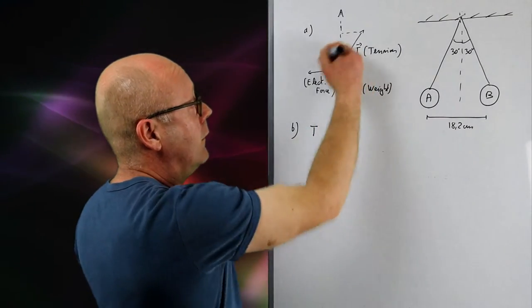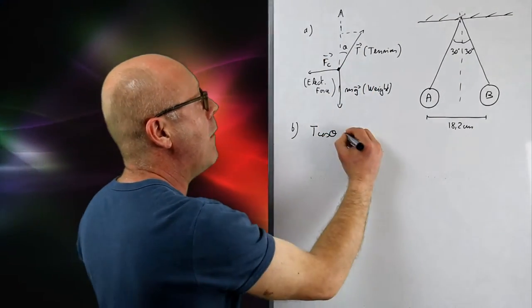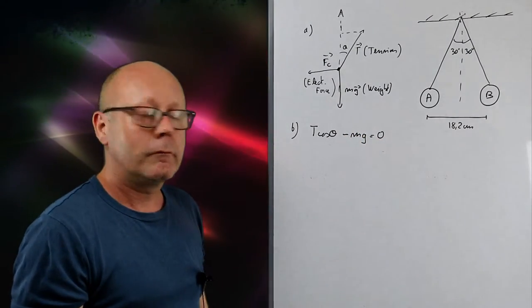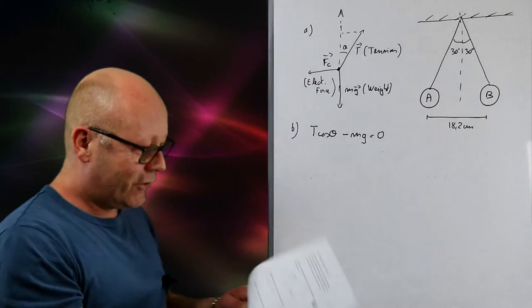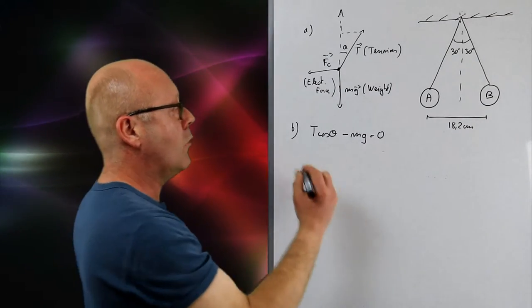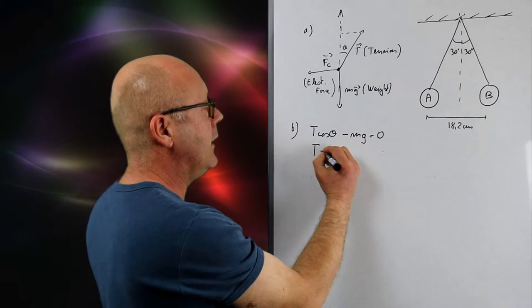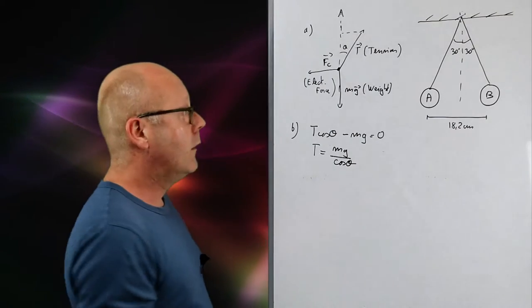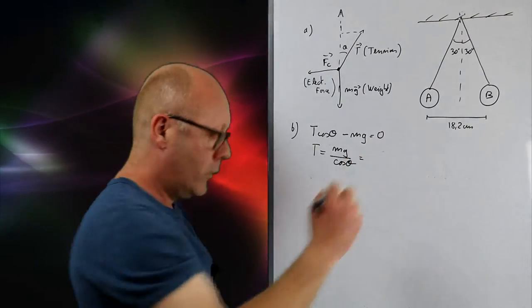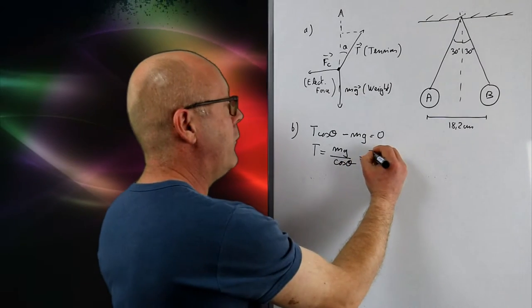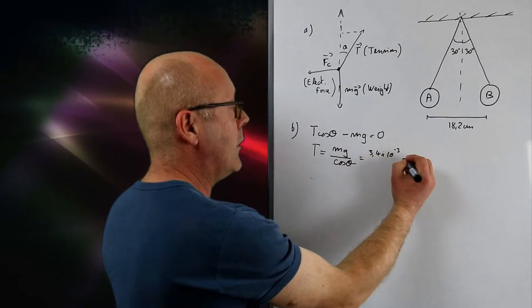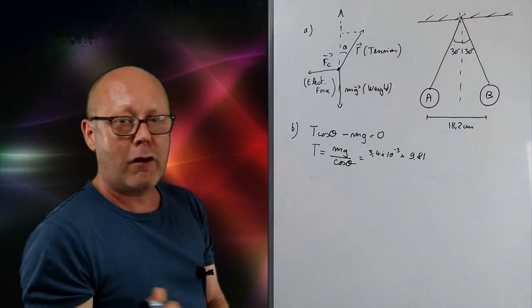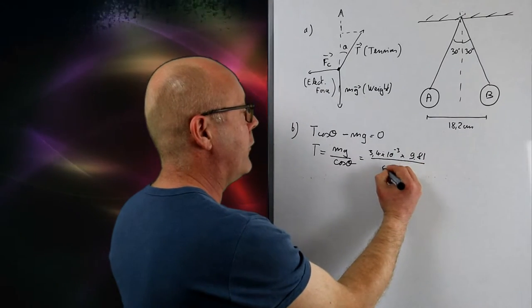I've got T cos theta minus mg equals zero. So what do they ask? The tension in one of the ropes. So T. T equals mg over cos theta. Now, I'll just plug in the numbers. So that was 3.4 grams, so 3.4 times 10 to the minus 3, because we need to use kilograms. 9.81 meters per second squared for the gravitational field strength. And cos of 30.